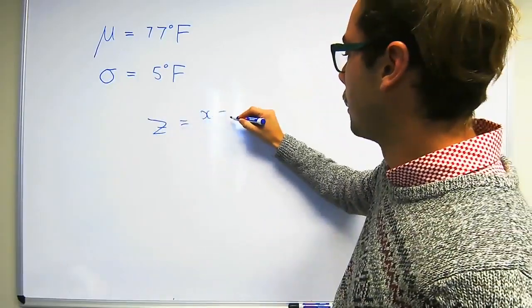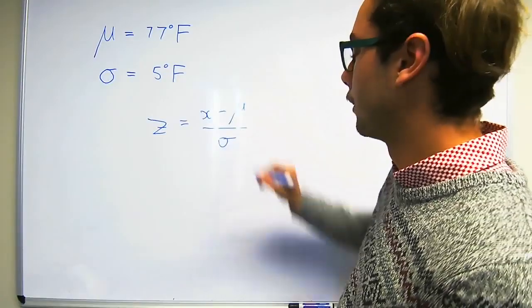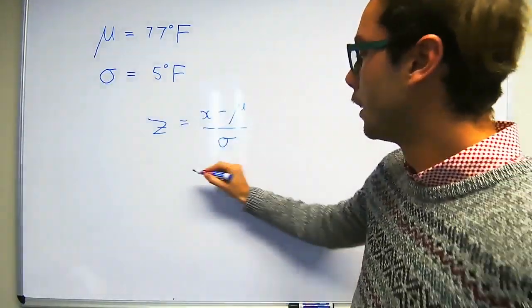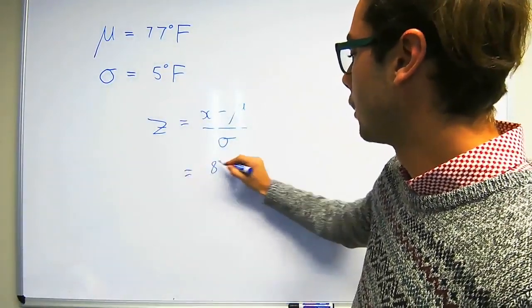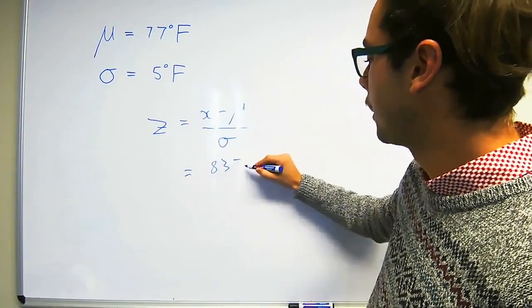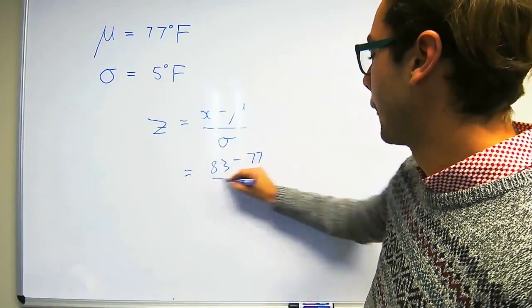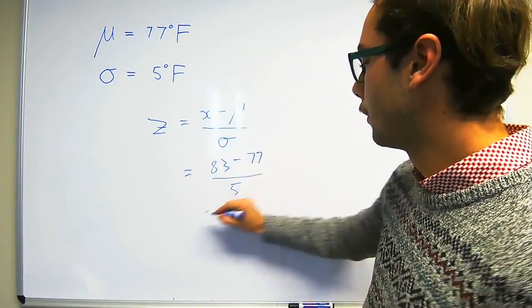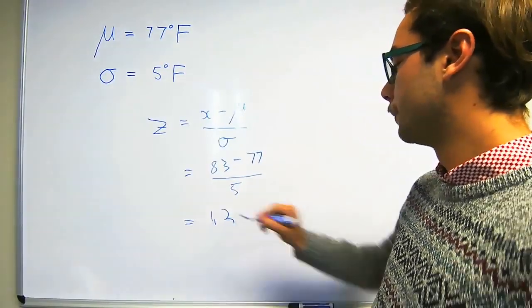Observation x minus the mean over the standard deviation. That's how we normalize the variable. So in our case we've got 83 as the observation minus the mean of 77 over the standard deviation of 5, which gives us the z value of 1.2.